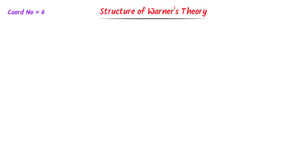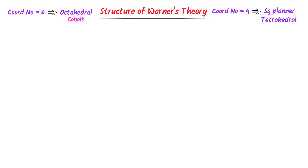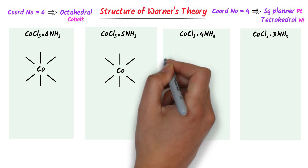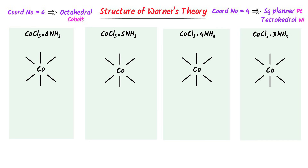Finally, we will learn the structures of Werner's theory. If the coordination number is six, the central metal atom forms octahedral geometry — for example, cobalt forms octahedral geometry. If the coordination number is four, the central metal atom either forms square planar geometry or tetrahedral geometry. For example, platinum forms square planar geometry while nickel forms tetrahedral geometry. Now consider these four coordination compounds of cobalt. I will draw their structures according to Werner's theory. For cobalt with octahedral geometry, I draw six lines around it. Primary valency is denoted by dotted lines and secondary valency by solid lines.